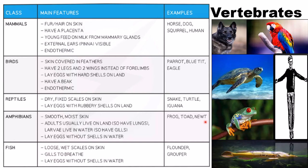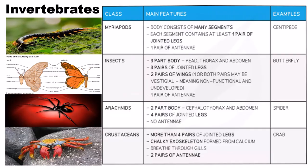Fish have loose wet scales on skin and use gills to breathe. They lay eggs without shells in water. Examples are flounder and grouper.